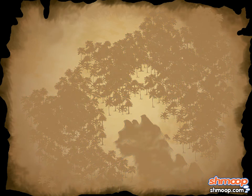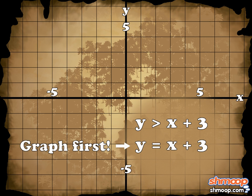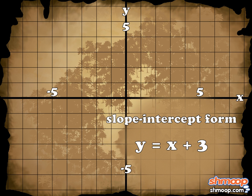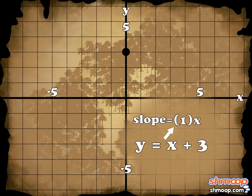Let's start by graphing the first inequality: y is greater than x plus 3. We can graph this by first graphing the equation y equals x plus 3. The equation is in slope-intercept form, so we can plot 3 on the y-axis as the y-intercept. The slope of the line is 1. Since slope is rise over run, we can rise one unit on the y-axis and run over one unit to the right.